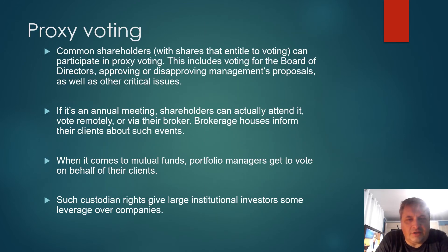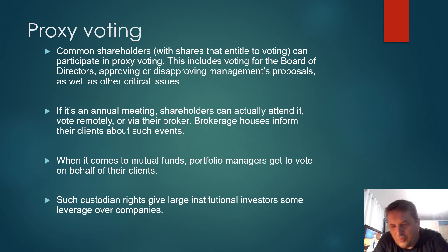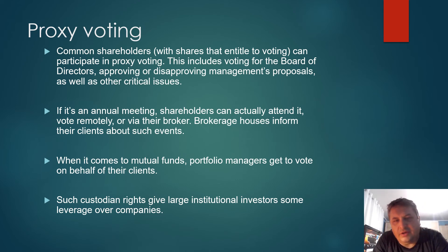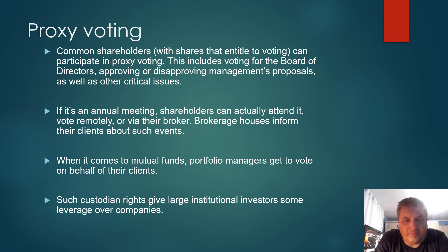Company shareholders have shares that entitle them to voting — the more shares you have, the more votes you have. This way they can participate in proxy voting, which includes voting for the board of directors, approving or disapproving management's proposals, as well as other critical issues. If there's an annual meeting, shareholders can actually attend it, vote remotely, or vote via their broker.